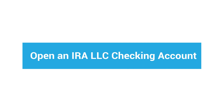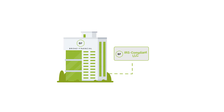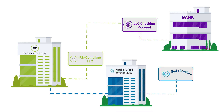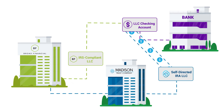Three: open an IRA LLC checking account. Once your LLC is established, take your paperwork to the bank of your choice and open a business checking account. This is the part of the process that upgrades your IRA LLC to the power of checkbook control. Then, you'll instruct Madison Trust to send funds from your self-directed IRA directly to your LLC checking account.